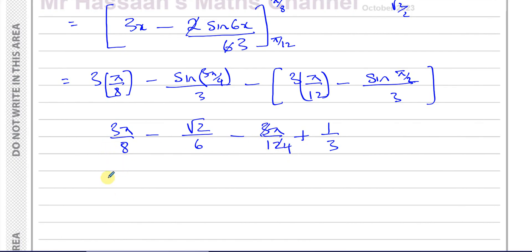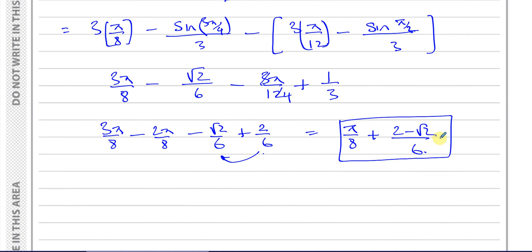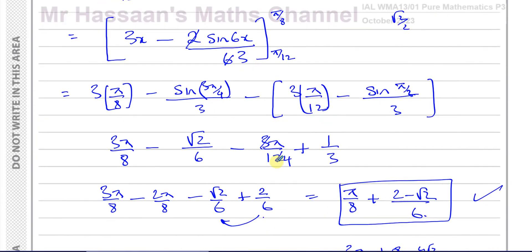Combining terms: 3pi over 8 minus pi over 4 is 3pi over 8 minus 2pi over 8, which is pi over 8. For the trig terms: minus root 2 over 6 plus 1 over 3, which is minus root 2 over 6 plus 2 over 6, giving (2 minus root 2) over 6. So the exact value of the integral is pi over 8 plus (2 minus root 2) over 6. This is the answer — it can also be written as a single fraction over 24 if preferred. Both forms are correct.